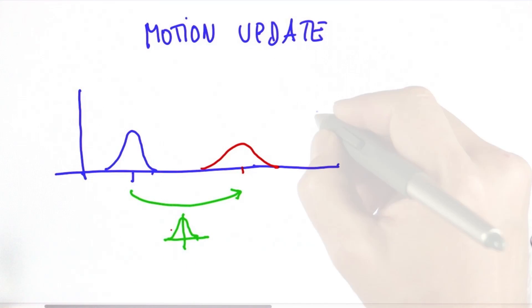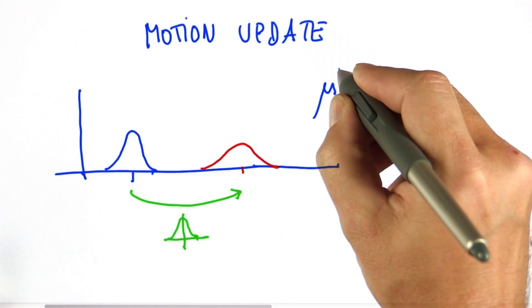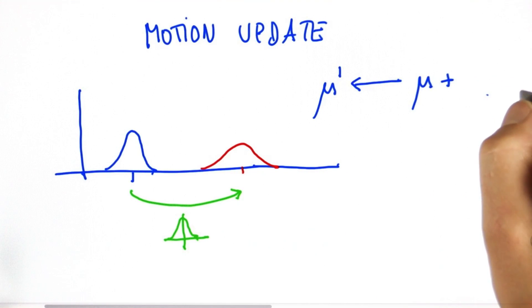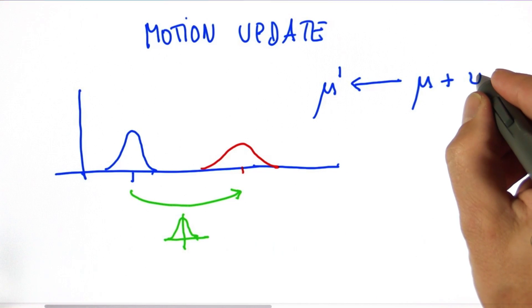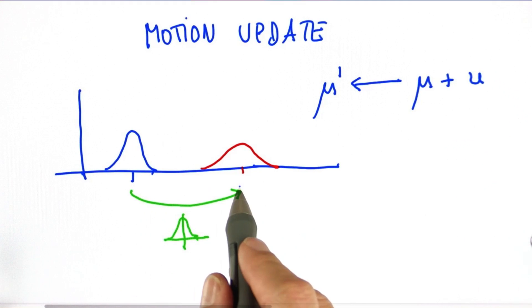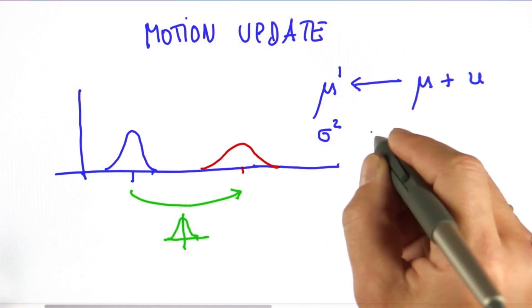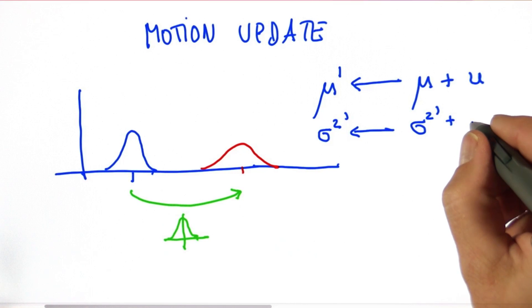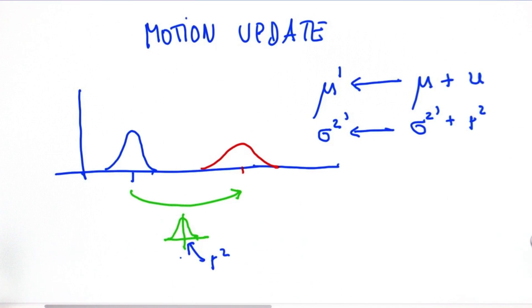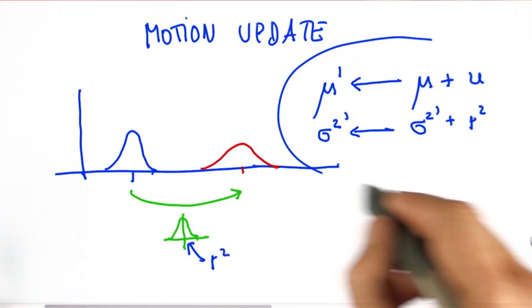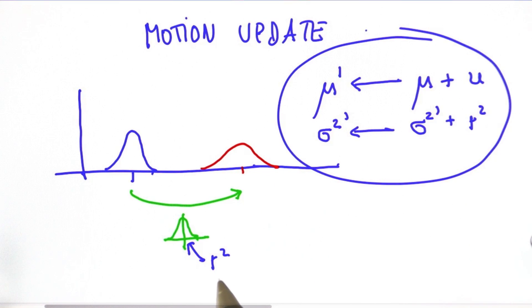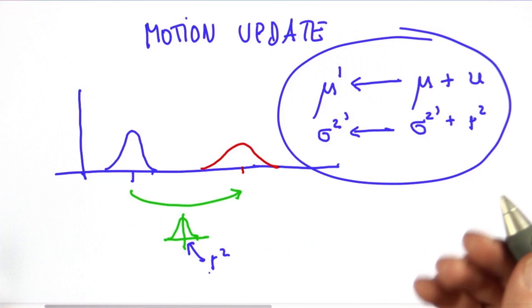Now the math for this is really easy. Your new mean is your old mean plus the motion, often called u. So if you move over 10 meters, this would be 10 meters. And your new sigma squared is your old sigma squared plus variance of the motion Gaussian. This is all you need to know, it's just an addition, and I won't prove it to you because it's really trivial.